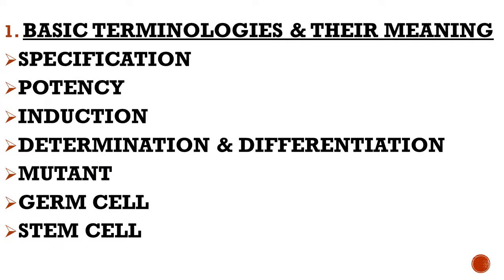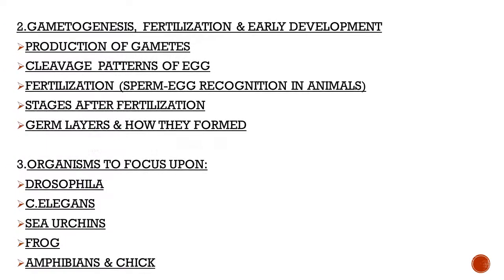You must go through these terminologies in a very precise manner. Next, moving on to gametogenesis, fertilization, and early development — early embryogenesis. First, production of gametes: how gametes are produced, what is the difference between spermatogenesis and oogenesis, what is the step-by-step process. This is very basic — you have already studied it in Class 11 and 12, and it also appears in human physiology.